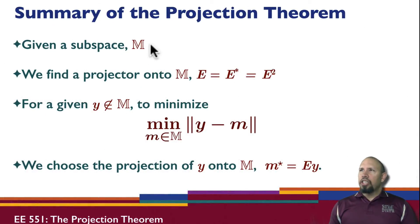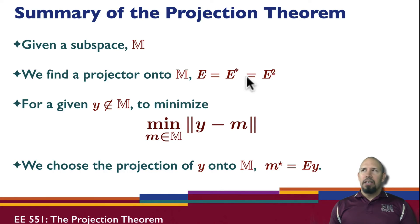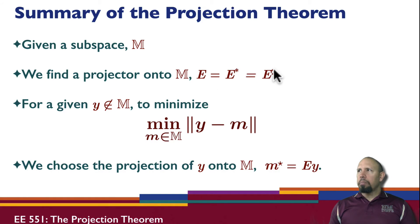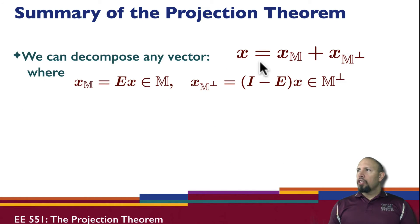So, a summary of the projection theorem: given a subspace M, we can find a projector onto M. A projector is such that E equals E adjoint equals E squared. These two equations basically define a projector. So for a given Y not in the subspace, to minimize the distance, we choose the projection of Y onto M — that is, M star equals E times Y. That's what the projection theorem says. The projection theorem requires a projector, and we have that.